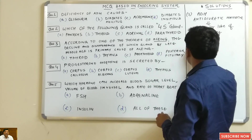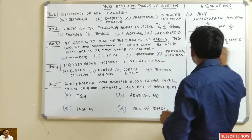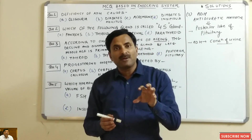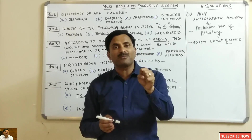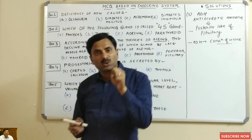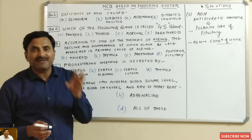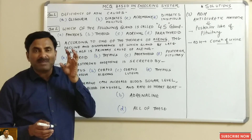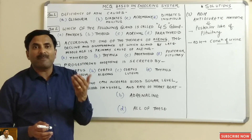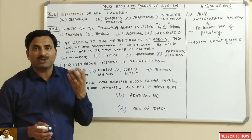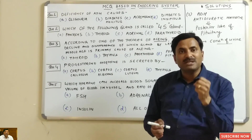ADH is responsible for the concentration of urine. Due to the presence of ADH, the distal convoluted tubule of the nephron reabsorbs water from the glomerular filtrate, so the urine released is concentrated. But if ADH becomes deficient in the body, the urine becomes diluted and more water is released out through the urine.